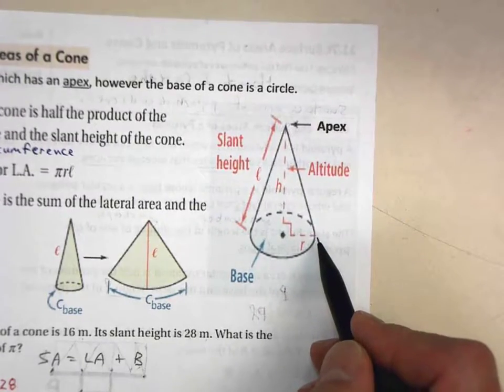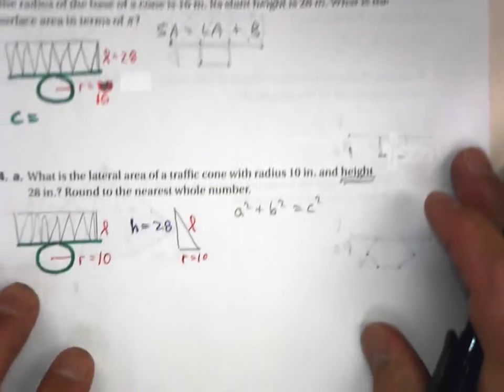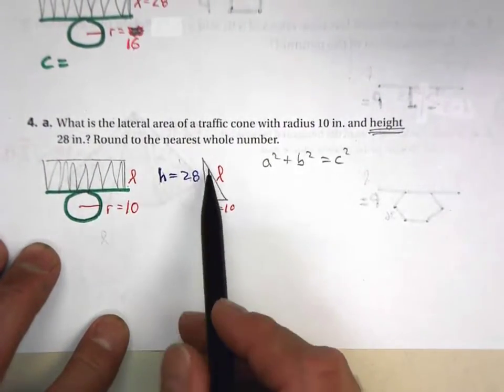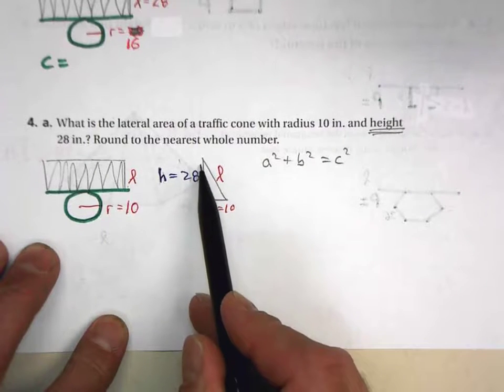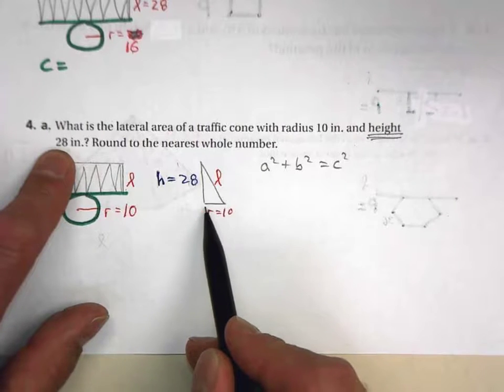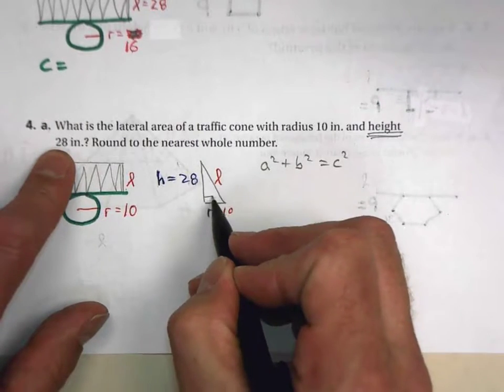of the circular base and the slant height. So go ahead and draw a little right triangle. The height of the cone is 28, as they tell us. The radius of the circular base is 10, and this is a right triangle.